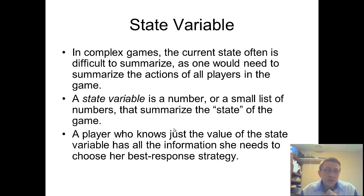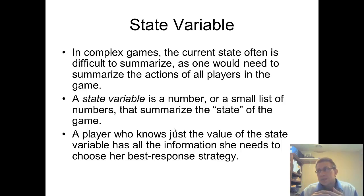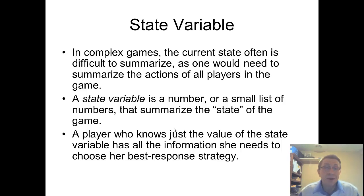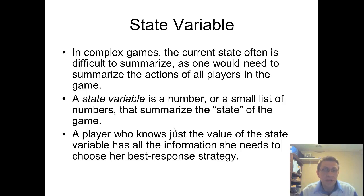Each agent could then choose the best response strategy. In road congestion, for example, the state variable might be what percentage of cars are on one road versus another. Based on how congested one road is, you'll know whether to take route A or route B — if route A is more congested, you take route B, and vice versa. The state variable is the level of congestion, and each agent is assumed to have the same utility function of wanting to minimize their time waiting in a traffic jam.